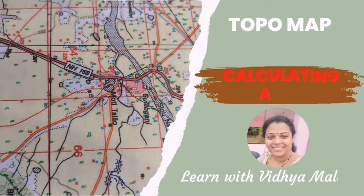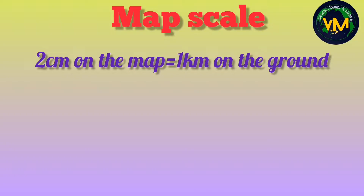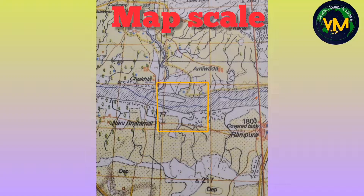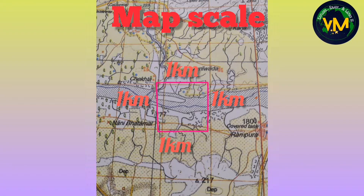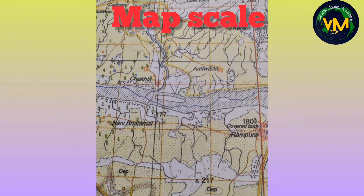Hello everyone, welcome to interpretation of topographical map part 7. I am Vidya Malar and I am going to teach you calculating area in topographical map. The map scale is 2 cm equal to 1 km, that is 2 cm on the map is equal to 1 km. If you measure each square then it will be 1 km on all sides in the ground. So if we find the number of squares that will be the answer, and always remember the answer should be written in square kilometer because each square is 1 km on all sides.